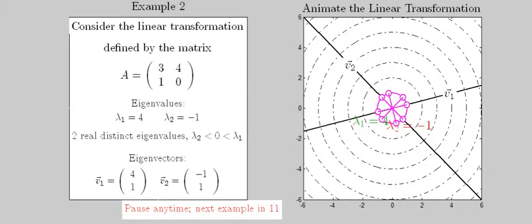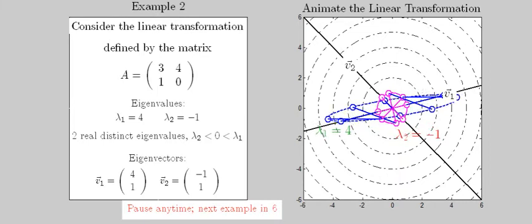The second example has one positive and one negative eigenvalue. Along the eigenvector corresponding to the positive value the image expands, along that for the negative value the vectors are reversed.